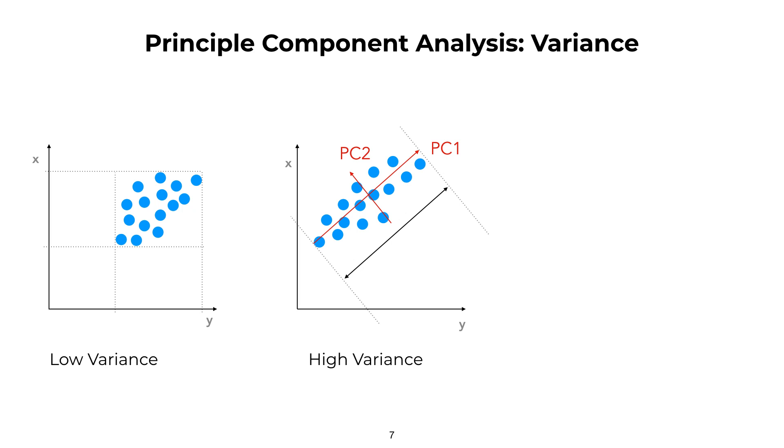This vector through the multi-dimensional space that maximizes the variance of the data is called a principal component. And just like with the previous example, we can add other principal components, such as PC2 or even PC3, thus visualizing our data by projecting it into a space of two or three axes that explain some percentage of data variance.